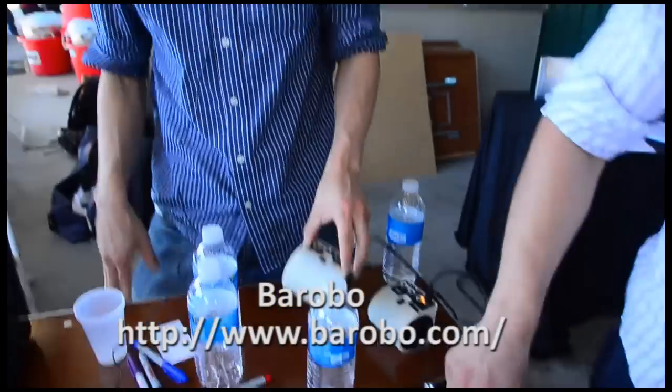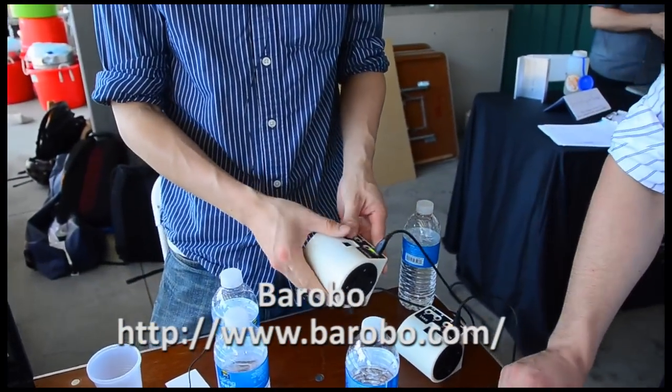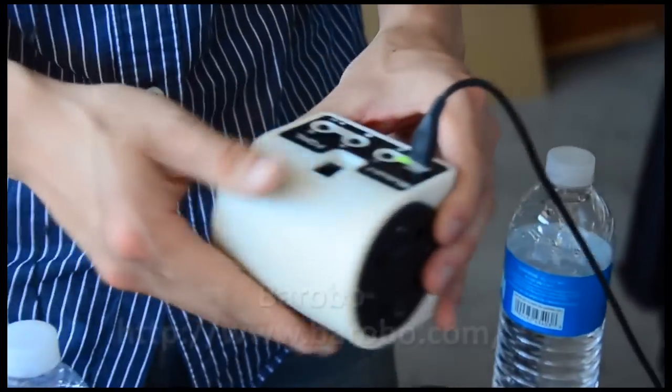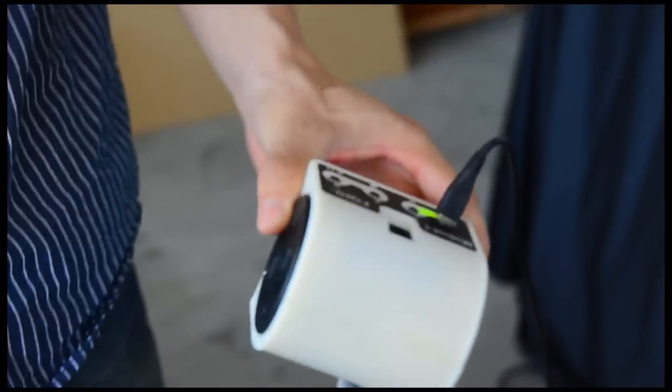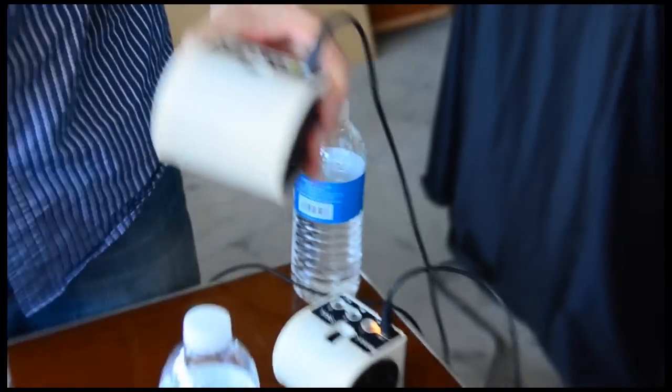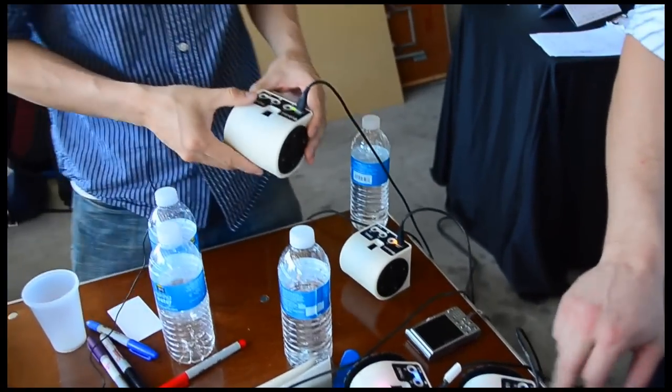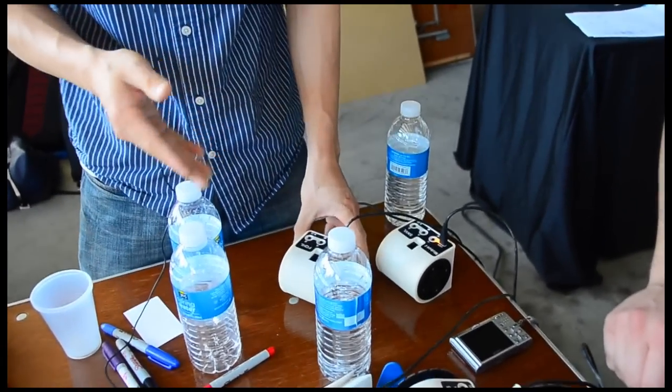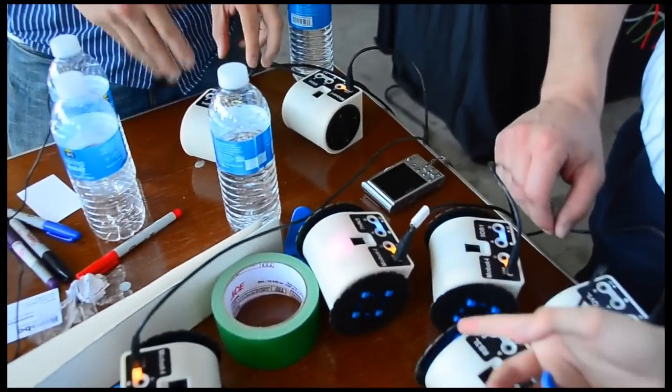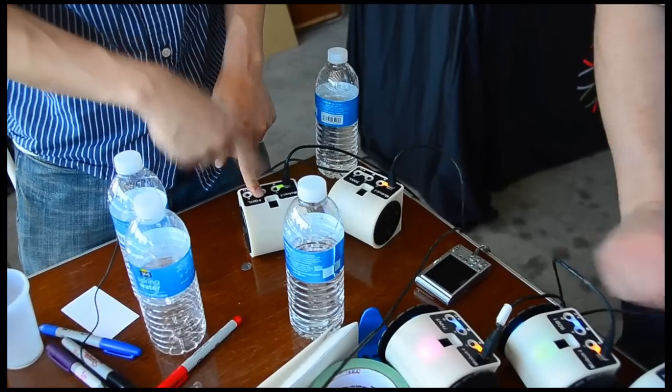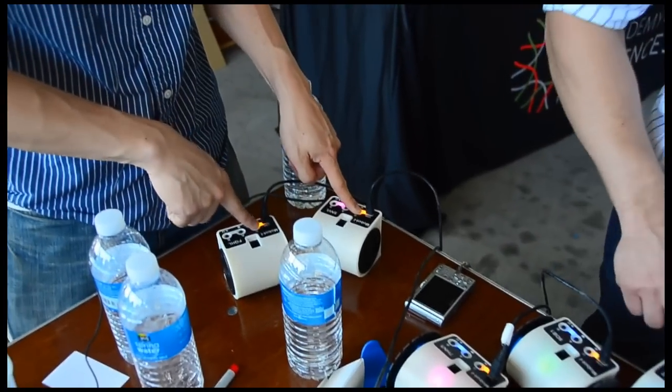So we're at the Stanford robot block party. I'm David. I'm here with a company called Brobo. We make educational modular robots. So this is our flagship product here. This is our modular robot. So they're able to connect together to form bigger robots from individual modules. But right now what we have is a little demo. It's showing off the accelerometer and the motor controllers.